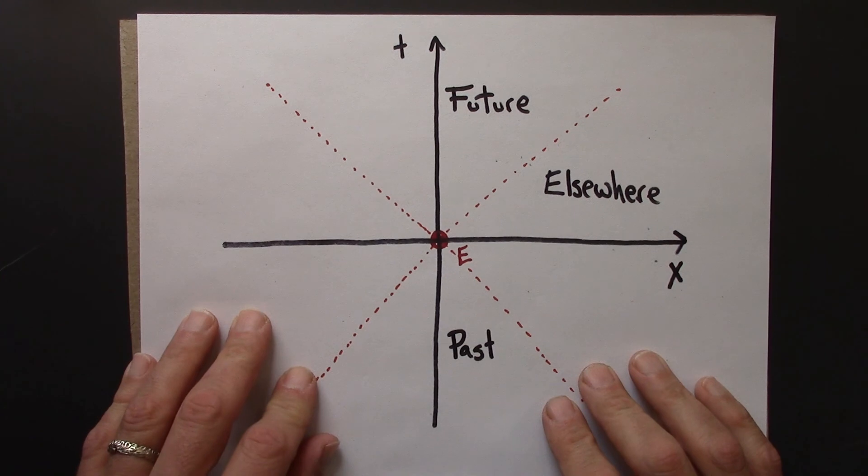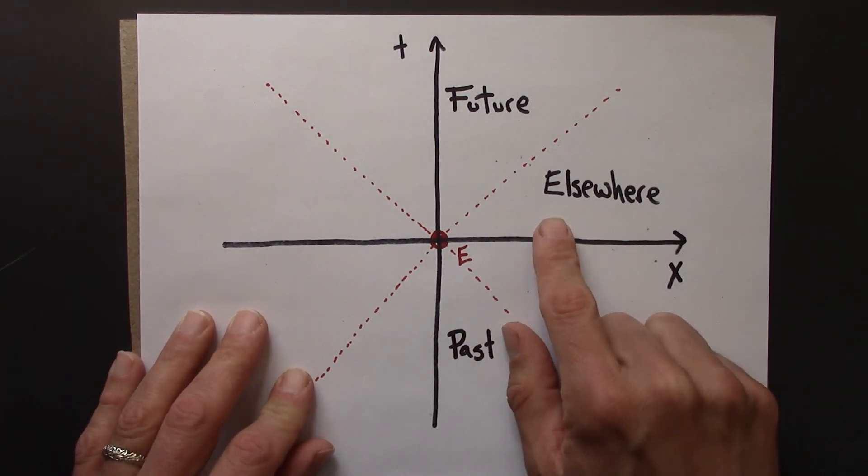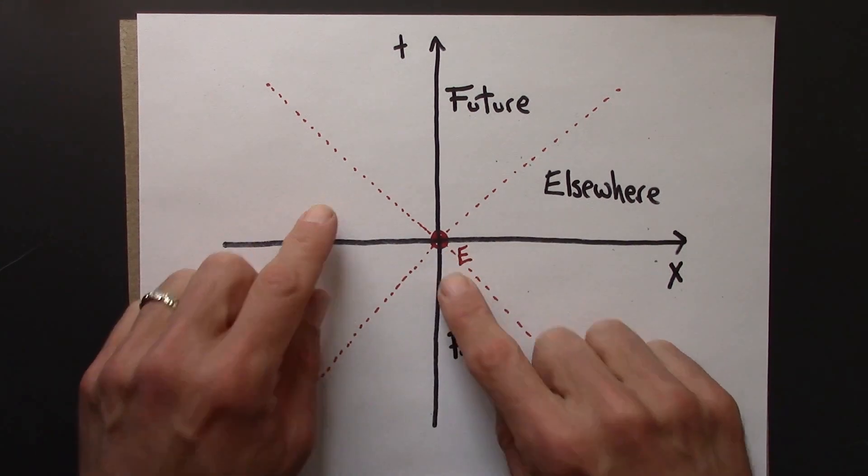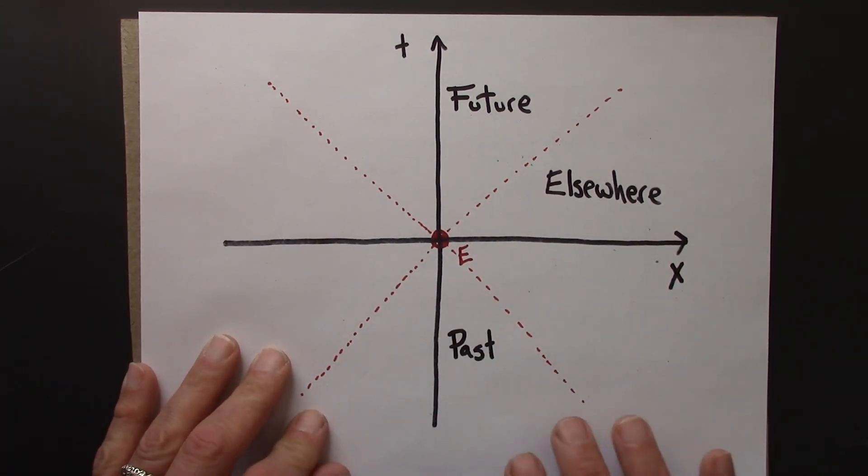So following this video is a quiz, where you can think about future past and elsewhere events in space-time that can or cannot be causally connected. And then after that, we'll end the unit by thinking about the Einstein velocity transformations. The relativistic version of the Galilean velocity transformations.